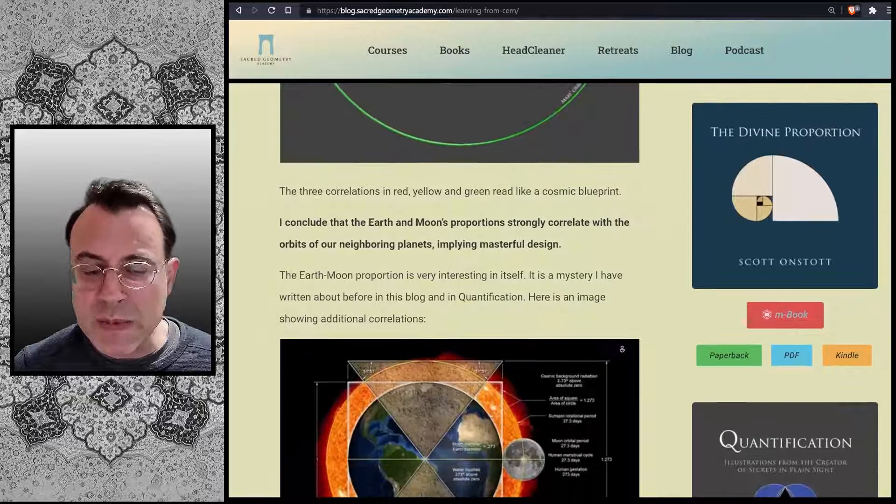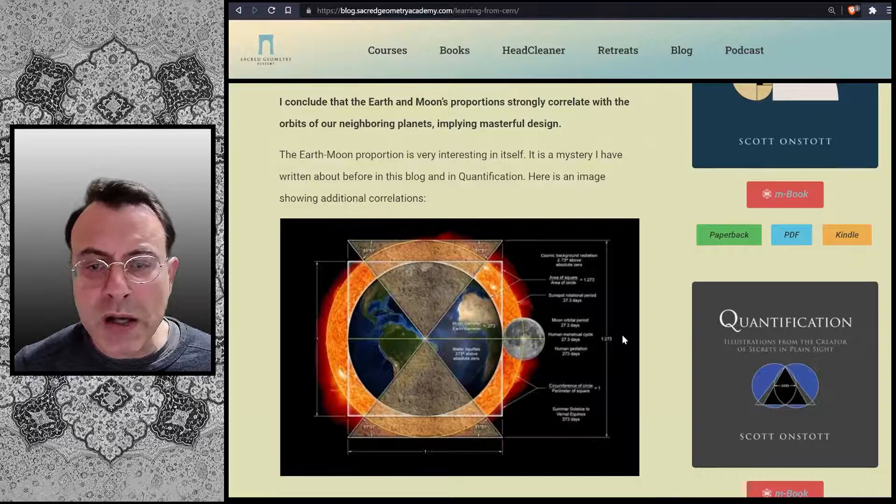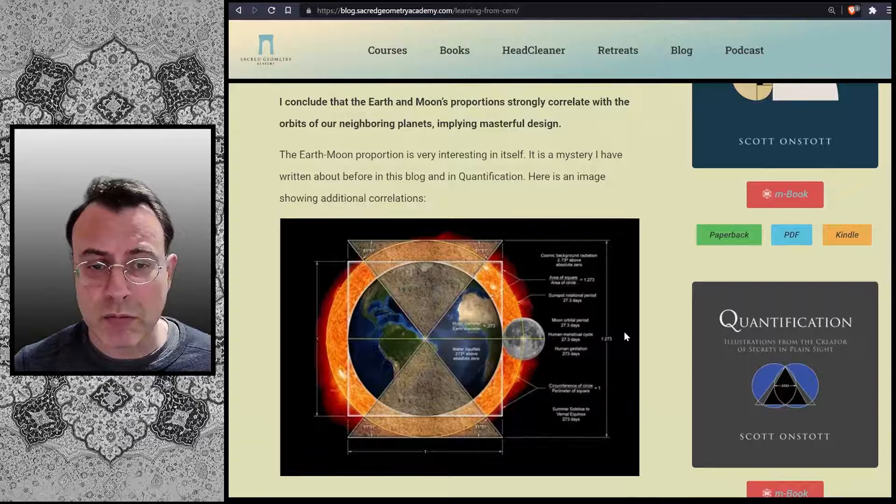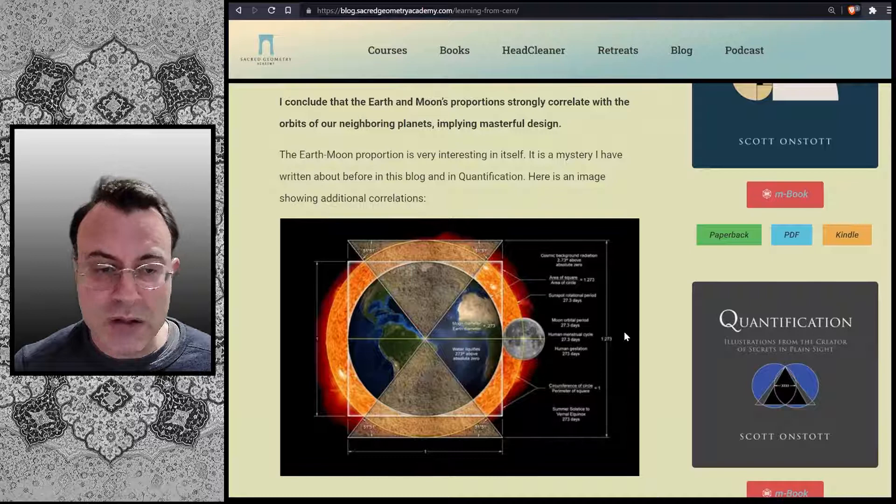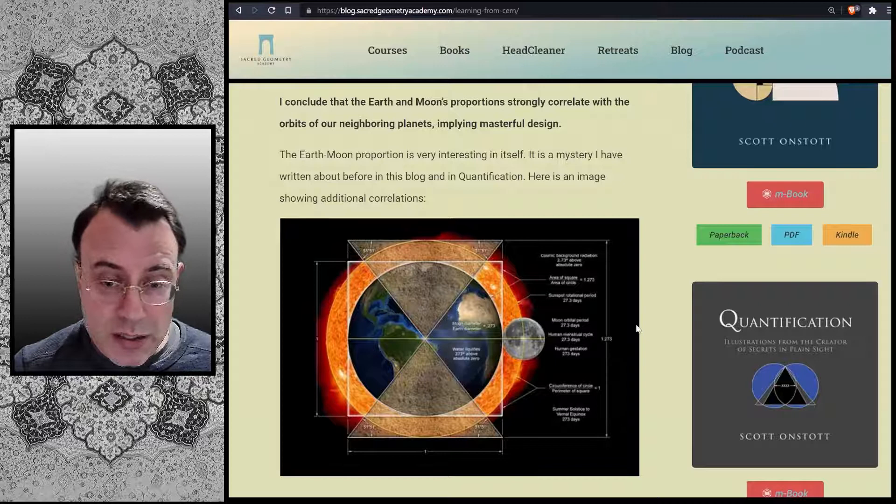The three correlations in red, yellow and green read like a cosmic blueprint. I conclude that the Earth and Moon's proportions strongly correlate with the orbits of our neighboring planets, implying masterful design. The Earth-Moon proportion is very interesting in itself. It is a mystery I have written about before in this blog and in quantification. Here is an image showing additional correlations.